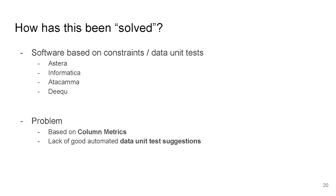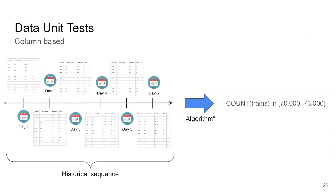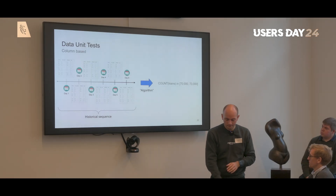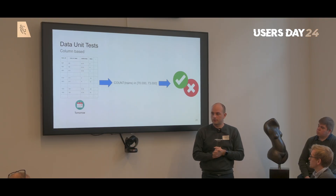What are these column-based metrics? Most of you are familiar with these — for example, a simple row count, or the minimum or average of a single column. An example might be counting the number of train stops in our dataset. With these column-based data unit tests, we run algorithms on the historical sequence and might conclude: I expect the count of train stops to be between 70,000 and 73,000 rows for any given weekday. Then when tomorrow's batch arrives, we validate that count and either accept or reject the batch.